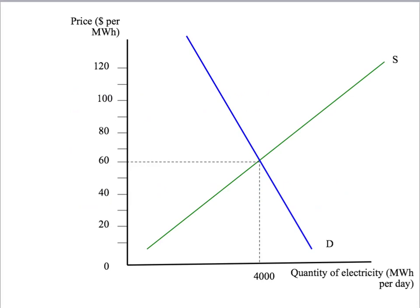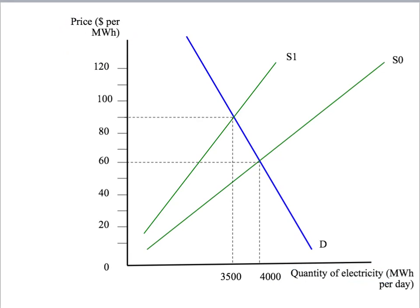So let's see what effect the increase in the price of coal had for the electricity market in Southeast Australia. On the vertical axis, we're going to have the price of electricity. That's going to be in dollars per megawatt hour. And down here on the horizontal axis, we're going to have the quantity of electricity. Before the price of coal goes up, so at our initial equilibrium, we will see that demand and supply cross at a price of $60 per megawatt hour and a consumption of about 4,000 megawatt hours per day.